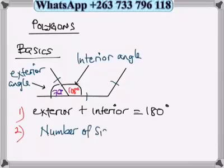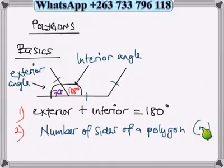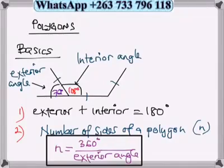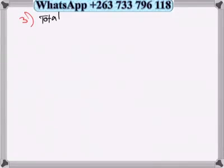Then number 2, we want to calculate the number of sides of a polygon, which is denoted by n. The formula is n equals to 360 divided by the exterior angle. So in this case, this is the exterior. So we can say 360 divided by 72 and this will give us 5. So our number of sides will be 5, which means that will be a pentagon.